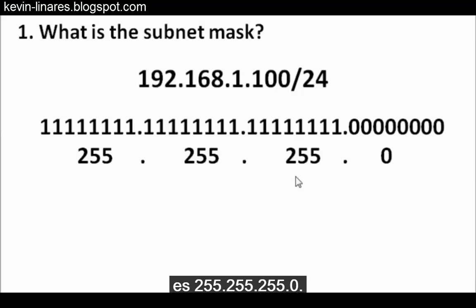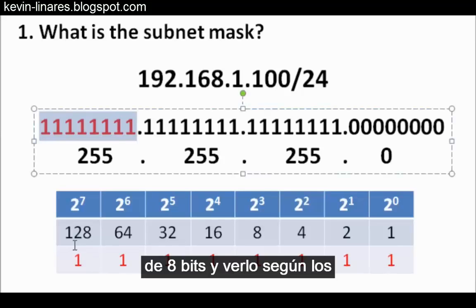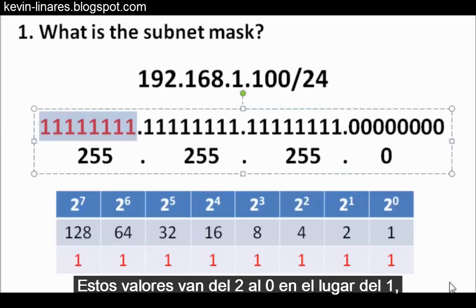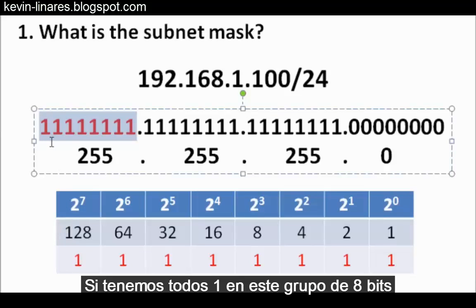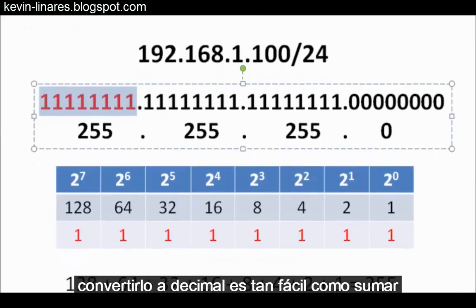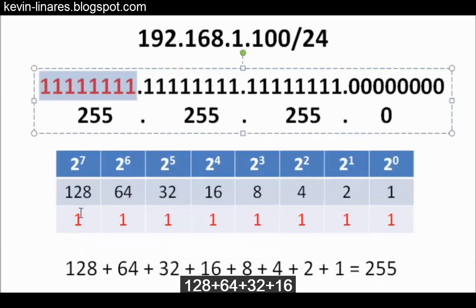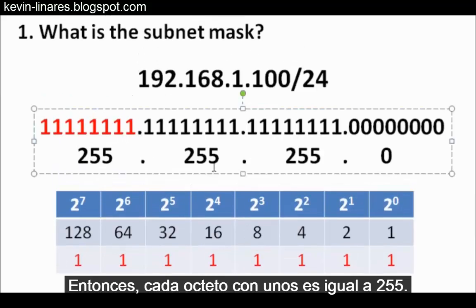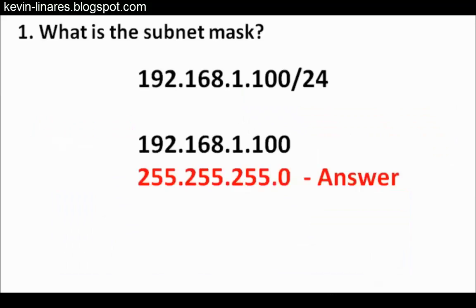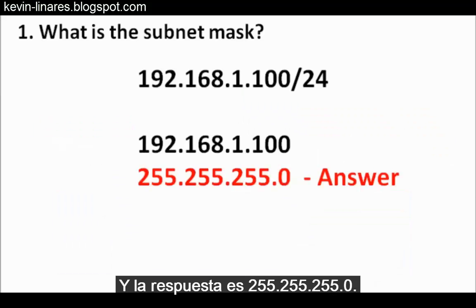Recall that we can take an octet of eight bits and look at it according to binary place values. The place values start from 2 to the 0 in the ones place all the way up to 2 to the 7th power, which is the 128 place. If all eight bits are ones, converting to decimal is simply 128 plus 64 plus 32 plus 16 plus 8 plus 4 plus 2 plus 1, which equals 255. So each octet with all ones equals 255, giving us 255.255.255.0.